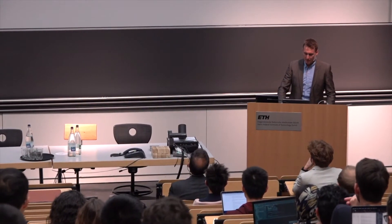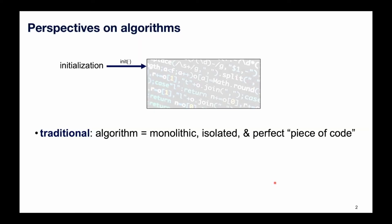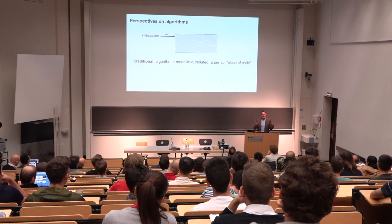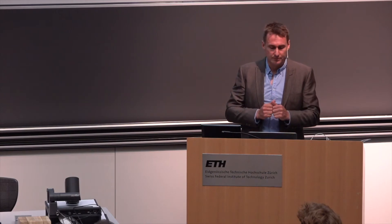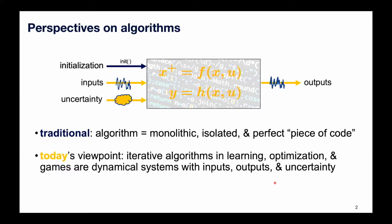Before that, I just wanted to get everybody on board and shine a spotlight on the topic of today by giving you two different perspectives on how you can think about algorithms. The traditional perspective is that an algorithm is a piece of code — somewhat monolithic, not interfacing with the world — where you put in some parameters, some initialization, some random seeds, but otherwise it's just a perfect map.